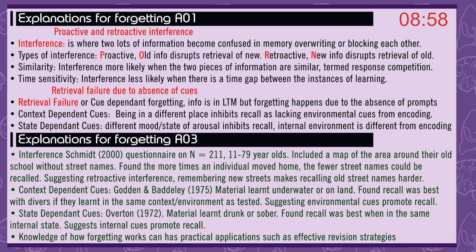Evidence for interference: Smith in 2000 conducted a questionnaire on 211 participants aged 11 to 79, including a map of the area around their old school without street names. Found the more times an individual moved home, the fewer street names could be recalled, suggesting retroactive interference — remembering new streets makes recalling old streets harder. Evidence for context-dependent cues: Godden and Baddeley in 1975 had material learned underwater or on land. Found recall was best with divers if they learned in the same context or environment as tested, suggesting environmental cues promote recall.